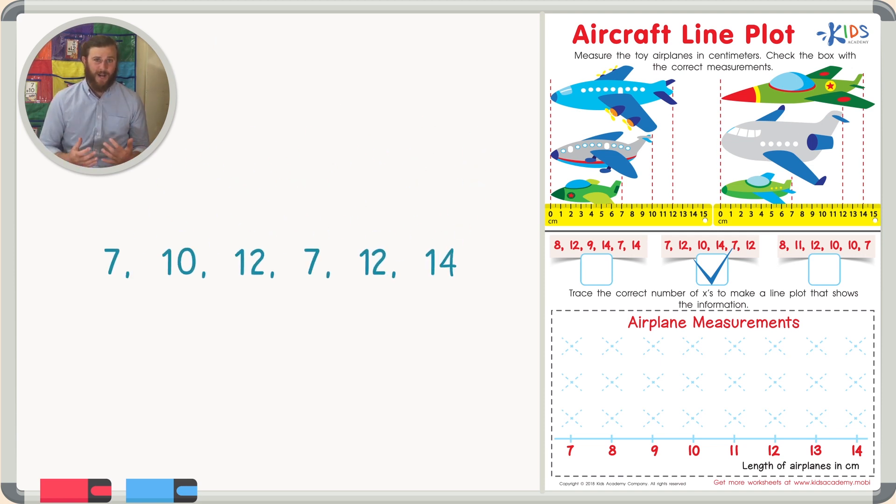Now what I like to do when I'm making a line plot is I like to put the numbers in order. So I'll write my two sevens. I know that I also have one 10. I have two 12s and a 14. So now it's my job to make my very own line plot.